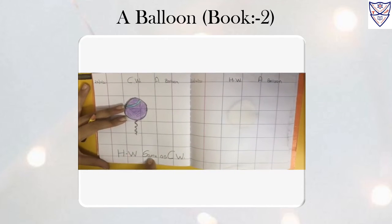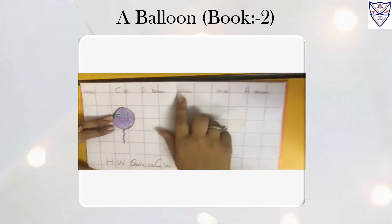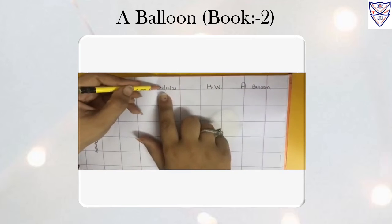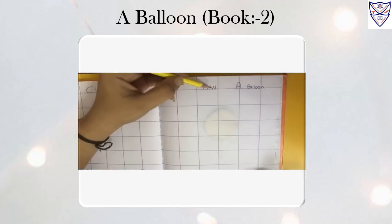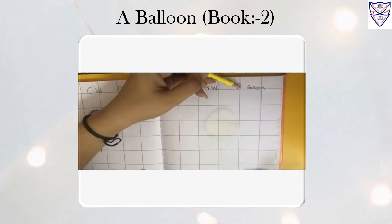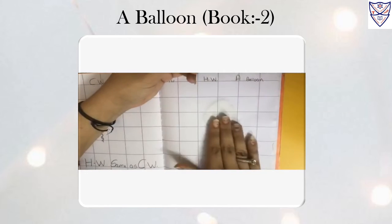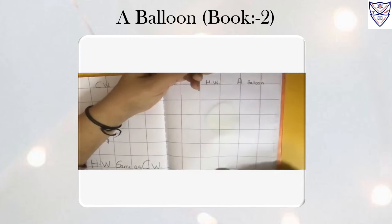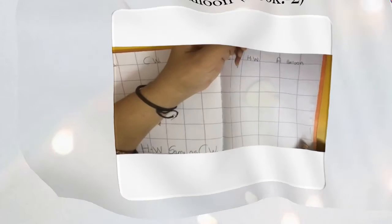Now we have to do HW same as CW. Page write today's date: 2-22-10-21 H.W. homework 'a balloon.' And you have to draw a balloon and fill in the color here. 3-22-10-21.